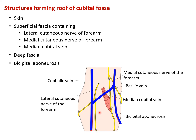The vein found on the roof of the cubital fossa is the median cubital vein, which joins two other superficial veins: the cephalic vein on the lateral aspect and the basilic vein on the medial aspect. Then we find deep fascia, and the deepest structure in the roof is the aponeurosis of the biceps muscle, known as bicipital aponeurosis.